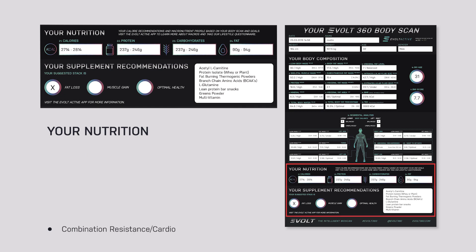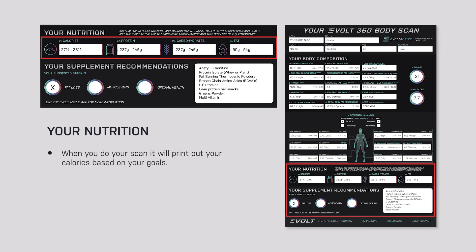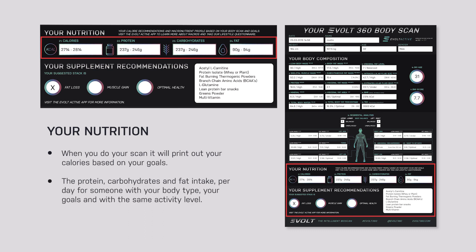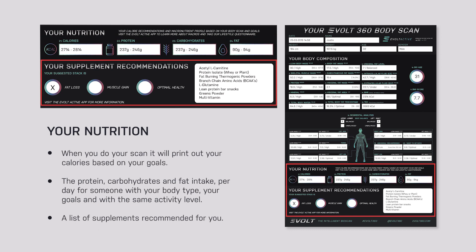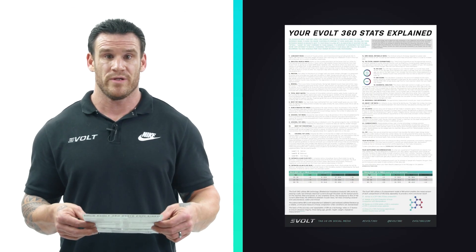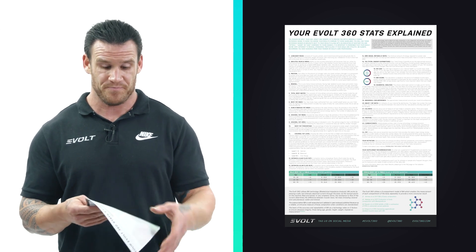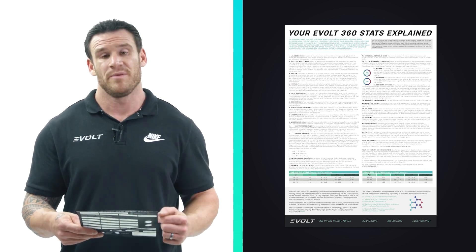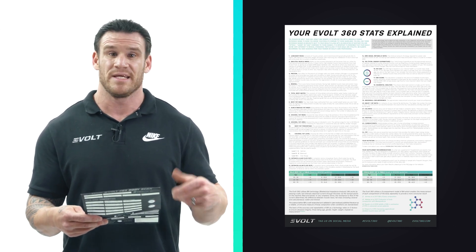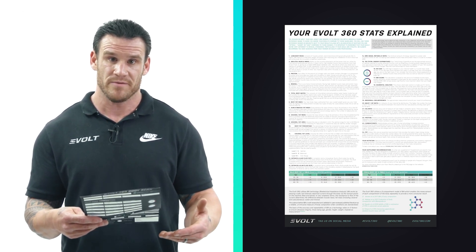Then you input what type of exercise it was — cardio, weights, resistance, a mixture, etc. When you do your scan, it will print out your calories based on your goals: protein, carbohydrates and fat intake per day, calculated for your body type, goals, and exercise level. It also includes a list of recommended supplements. The scan sheet has all this info on the back — we recommend reading through it four or five times and getting really familiar with it before you go through it with someone.